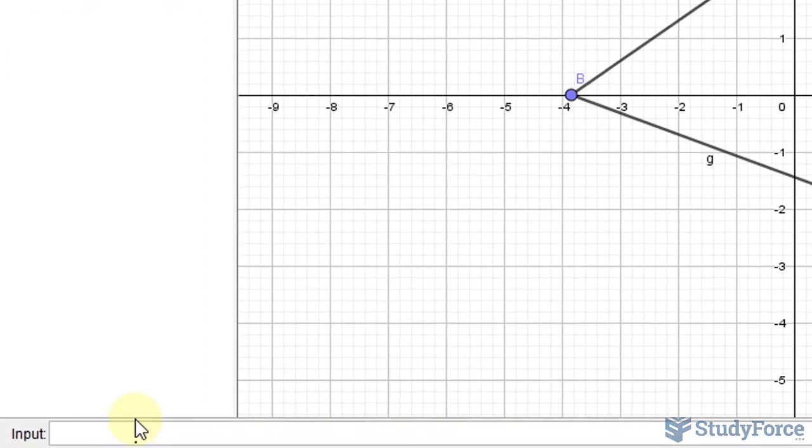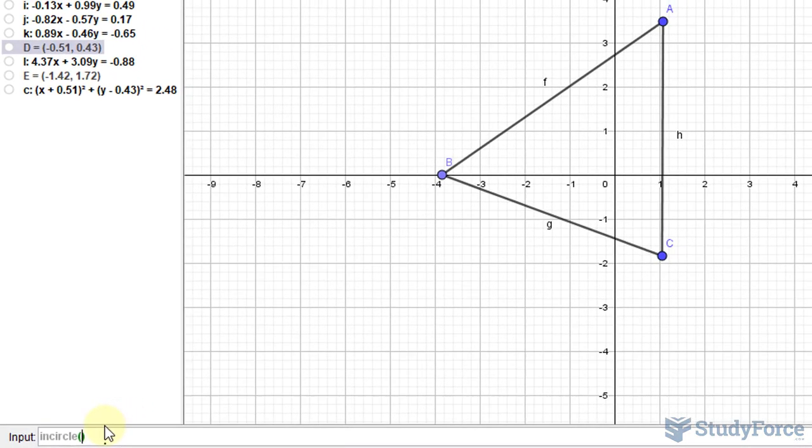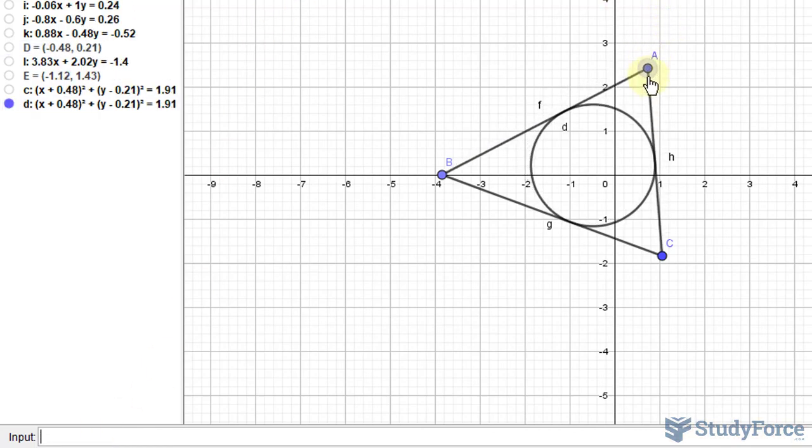And using the input of in-circle, all you have to do now is state the points A, B, C. And that creates a perfect in-circle within the triangle.